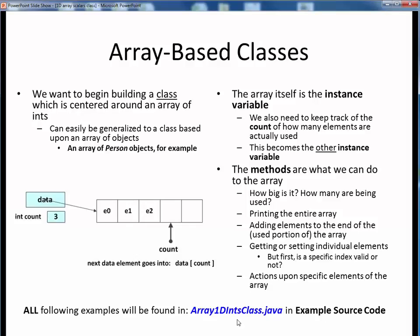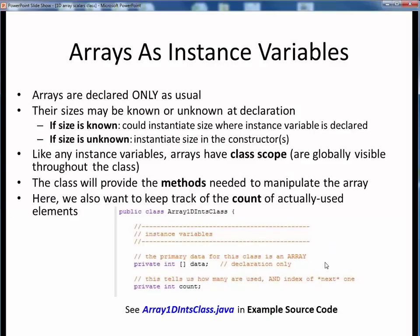I would strongly encourage you to follow along in that file in JGRASP and view its associated code walkthrough video as needed. Here's what our array instance variables might look like. In this code example, this int array called data is declared only — we may or may not know its intended size at this point, but we'll deal with that in its constructors. Like any other instance variable, this array has class scope, meaning it will be globally visible to all of its methods. We also declare a count variable to explicitly track how many array elements are actually in use. Both instance variables are declared private to this class.